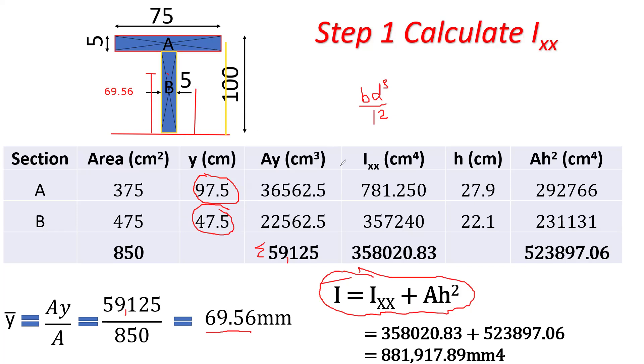Again, for B, it will be bd cubed over 12. Our breadth is 5 times our depth 95 cubed divided by 12, you get 357,240. So if you sum these two, you'll get this huge figure here, 358,020.83. I wish it was my bank account balance. Unfortunately it is not. Maybe I'll get there one day, God willing.